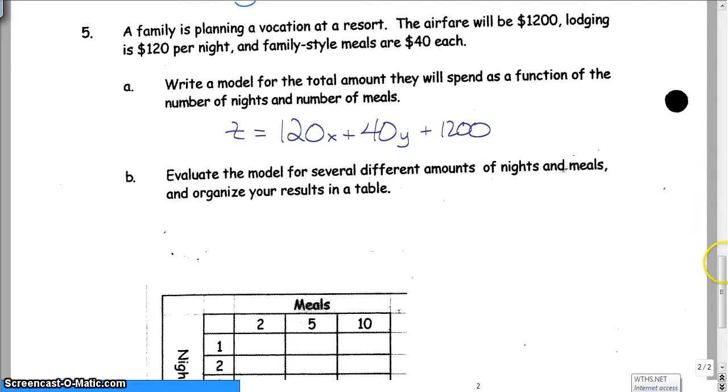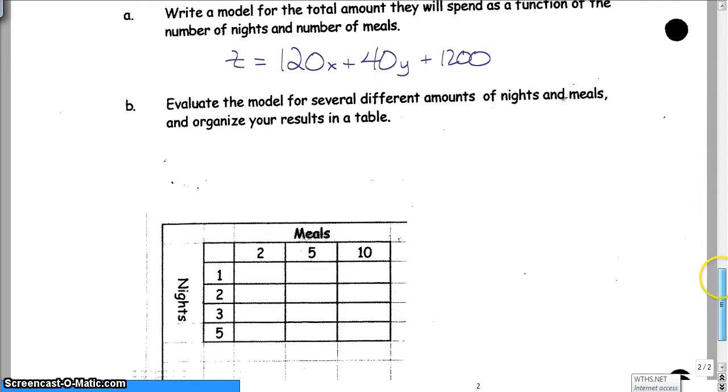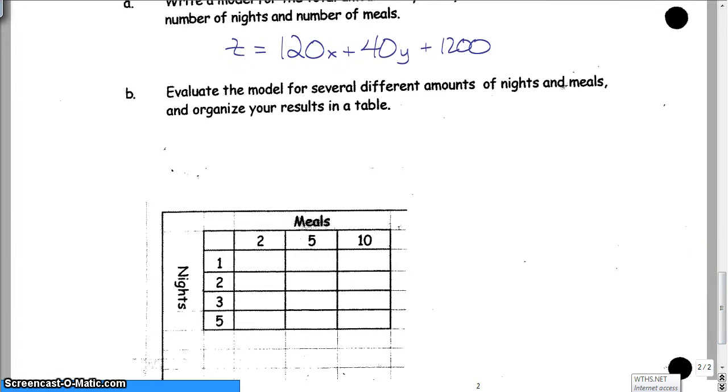Okay, so now all you have to do is evaluate the model for several different amounts of nights and meals. So I'll do one of them with you and then you can finish it. So we have the cost, which is going to be $120 per night. So we're going to say what if we stayed for one night and we had two meals.